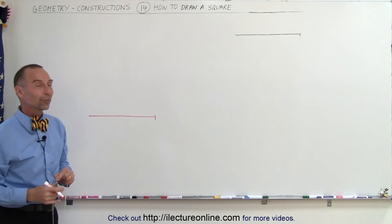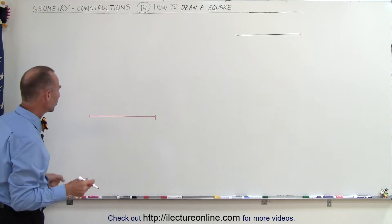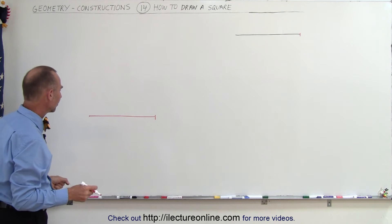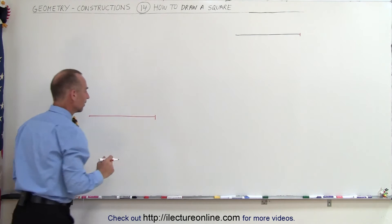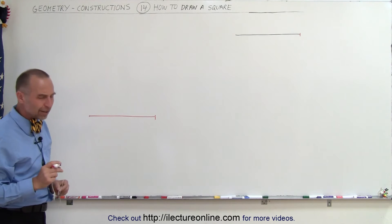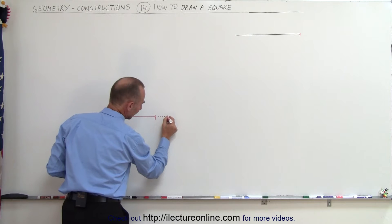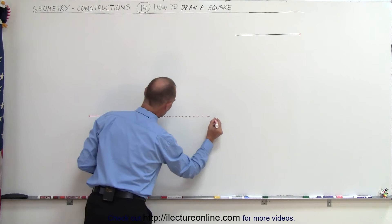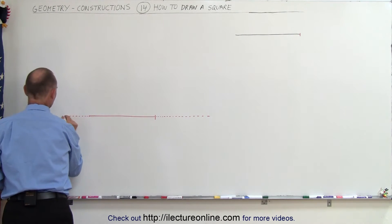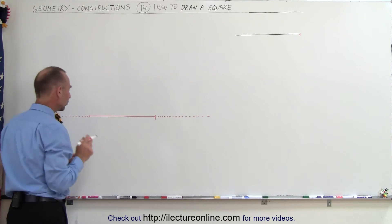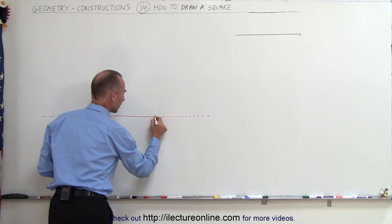And there's at least one of the four sides of the square. Now, how do we find the other three sides? Well, we need to find two perpendicular lines. So what we can do is go ahead and extend this line a little bit in this direction, and extend it a little bit in the other direction. Here are my two endpoints of my line segment.